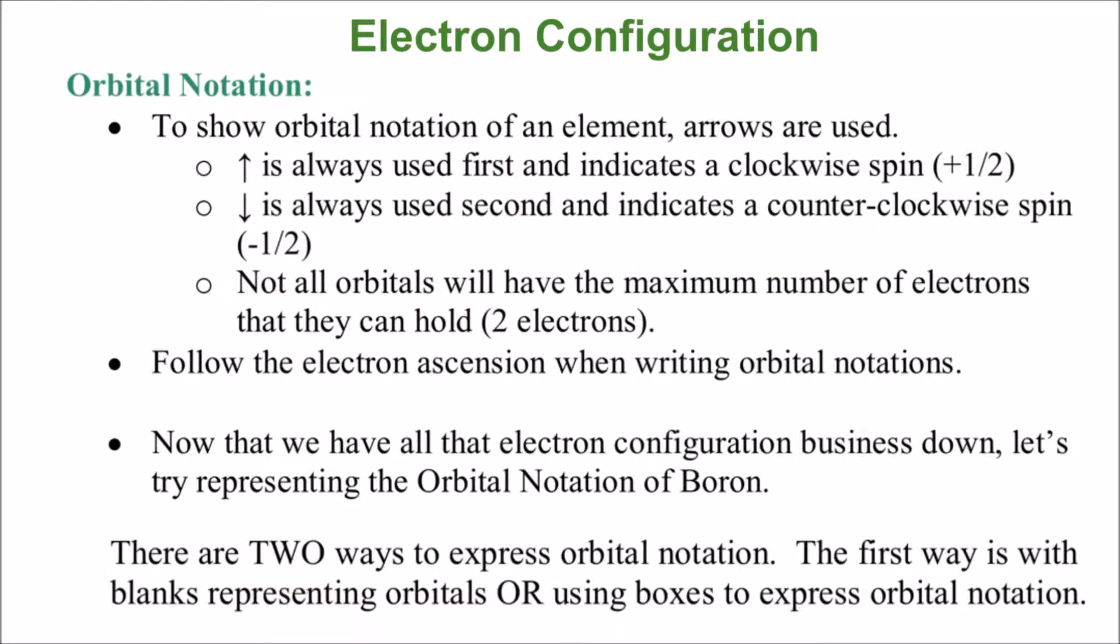There are two ways to express orbital notation. The first way is with blanks using energy hierarchy, and the next one is called the box method and it's more horizontal. This one's like vertical, this one's horizontal. So let me show you what I mean.